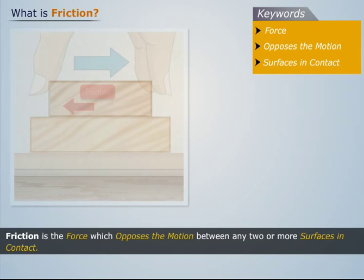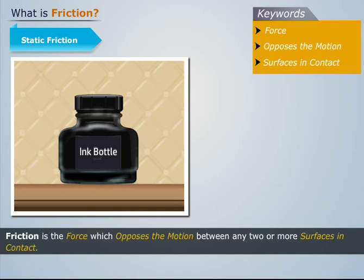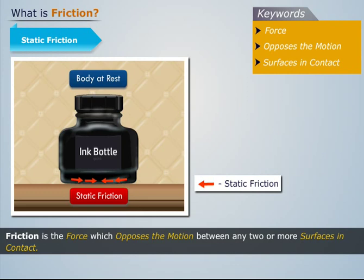Friction can be classified into two types: static friction and dynamic friction. Static friction: when a body is placed on a surface and it remains static or at rest on that surface, the friction it experiences is called static friction.